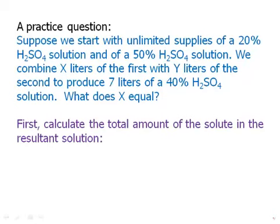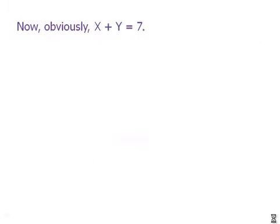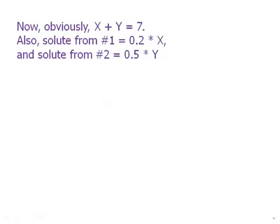So what we're going to do is focus on the solute. The X plus Y equals 7, that's the total equation. The solute, well, the resultant solution is 40% of 7 liters, so that's 2.8 liters of solute. Alright, so our total equation is X plus Y equals 7. The solute from solution 1 is 0.2 times X. The solute from solution 2 is 0.5 times Y. We add those two, and it should add up to the total solute. So that's our second equation. Our first equation is X plus Y equals 7. Our second equation is this solute equation, 0.2X plus 0.5Y equals 2.8.